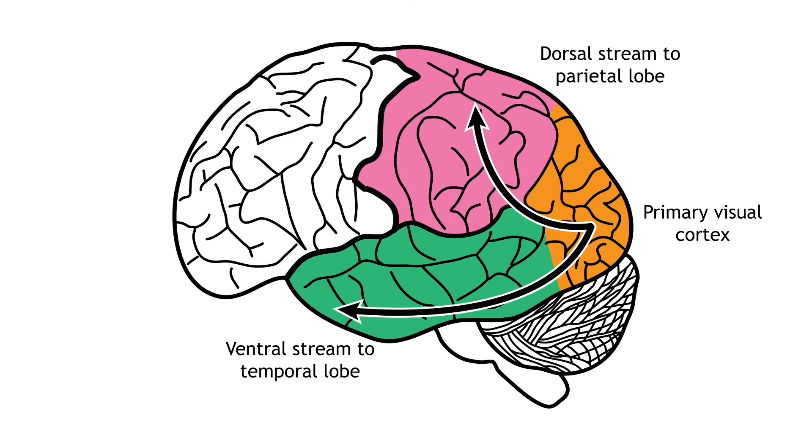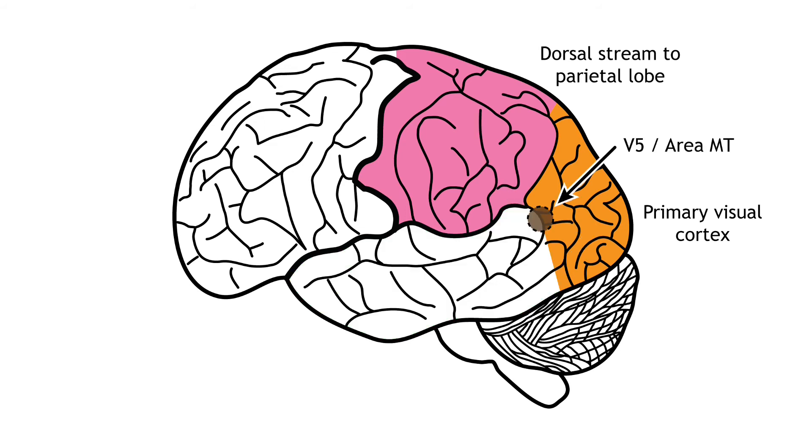Information that travels from the striate cortex up through the parietal lobe is responsible for motion or spatial components of vision. One of the most important regions in the dorsal pathway is region MT, also called V5. In this region, neurons are preferentially activated by specific direction of movement by an object, for example, left to right or up to down.